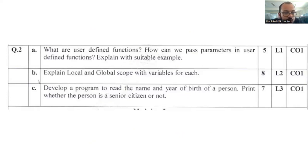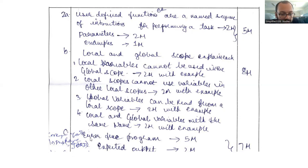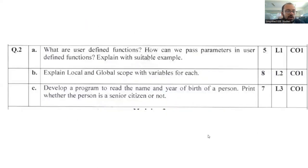Question 2C: develop a program to read the name and year of birth of a person and print whether the person is a senior citizen or not. This is simple — you can use the elif statement to complete it. You will require an input function to accept input from the user, an elif statement, and you can define the age variable. The expected output is worth two marks, and any program with correct logic will earn marks. Weightage is seven marks.